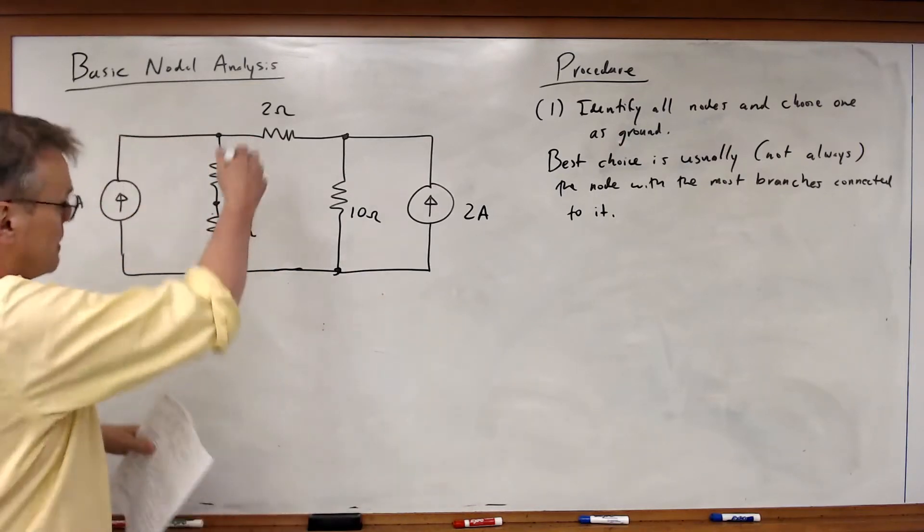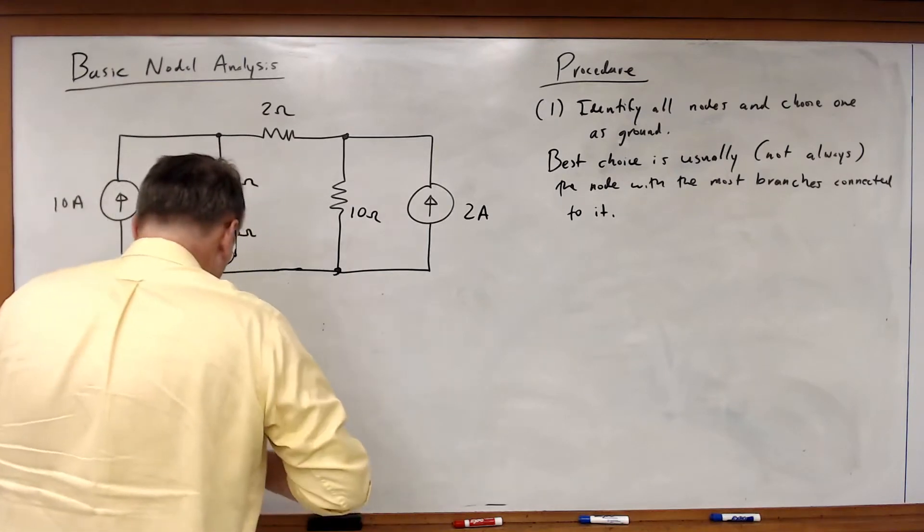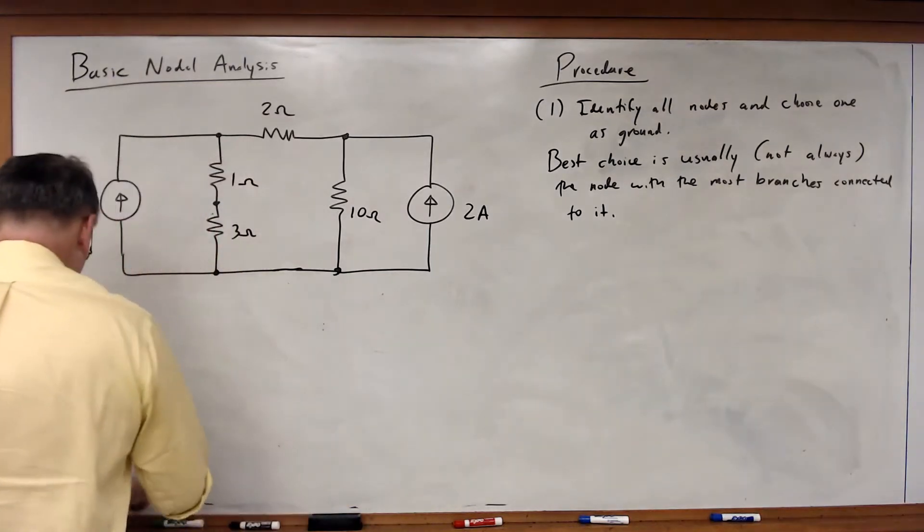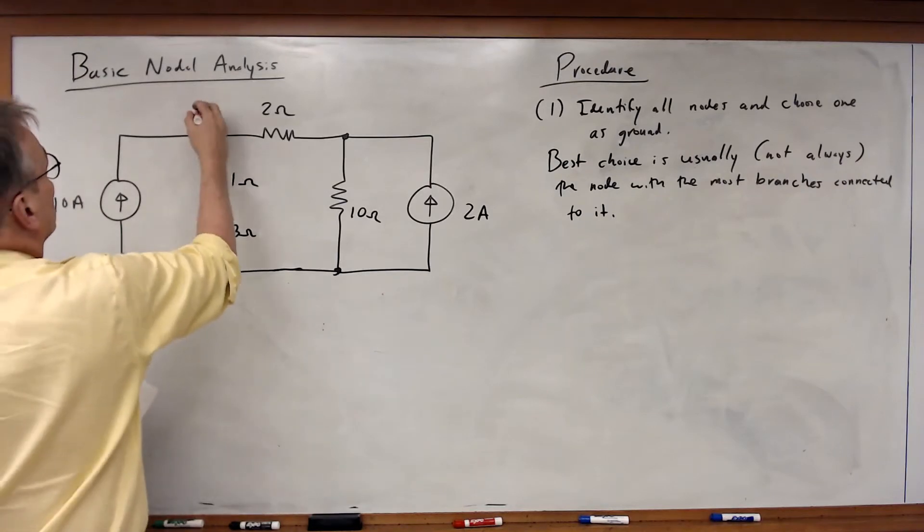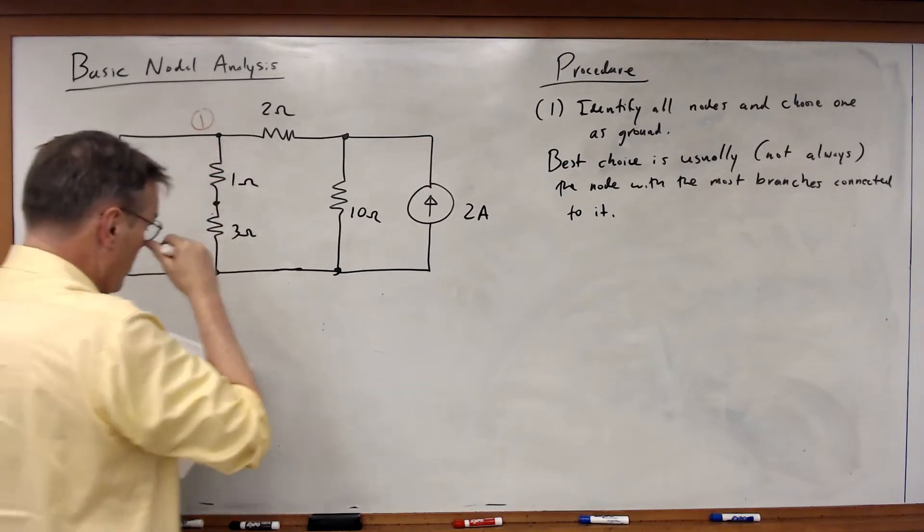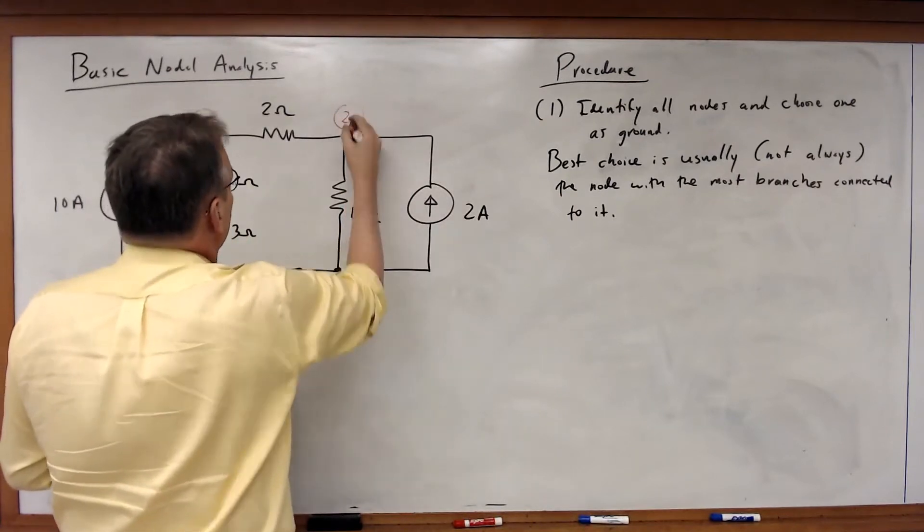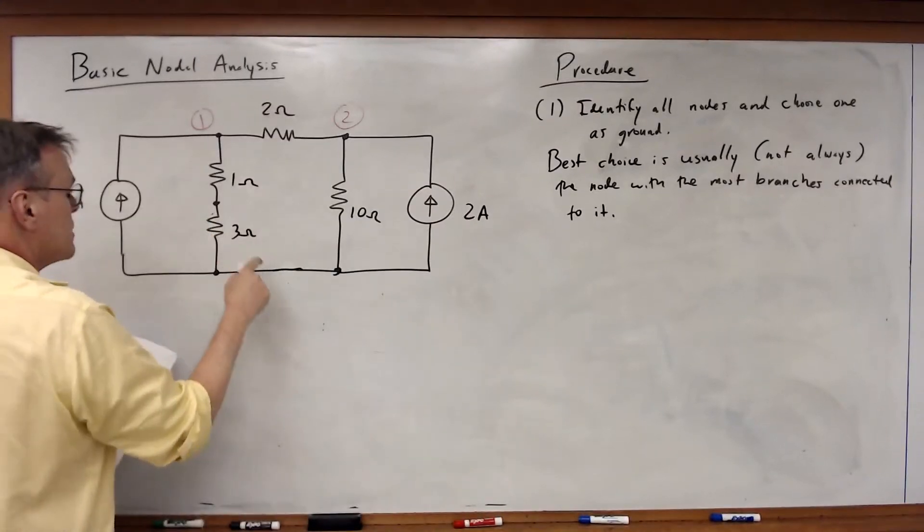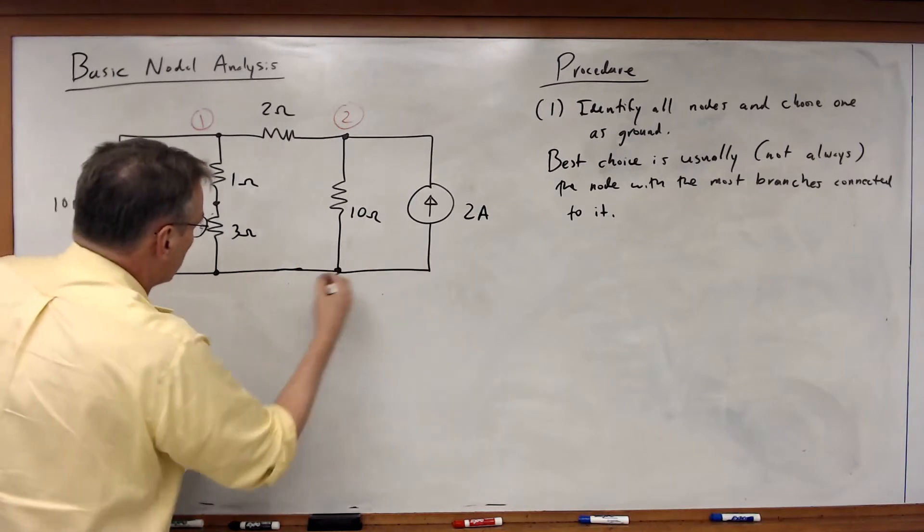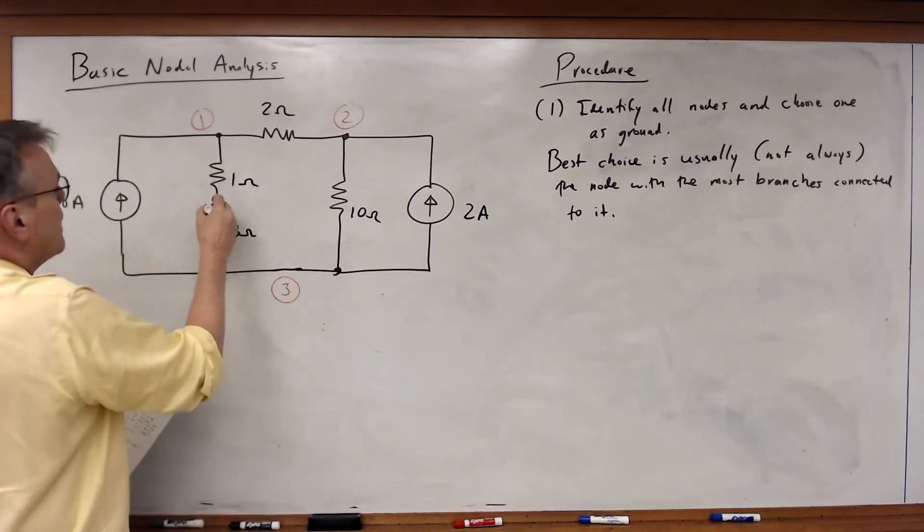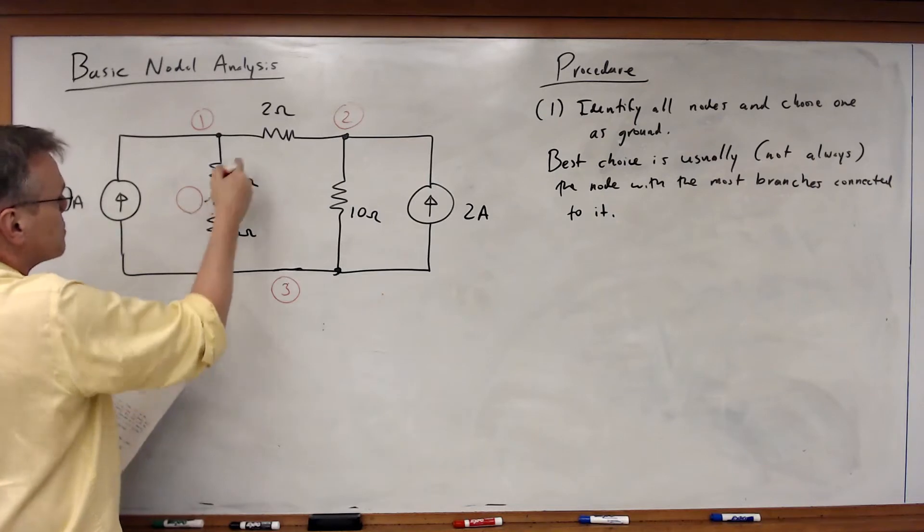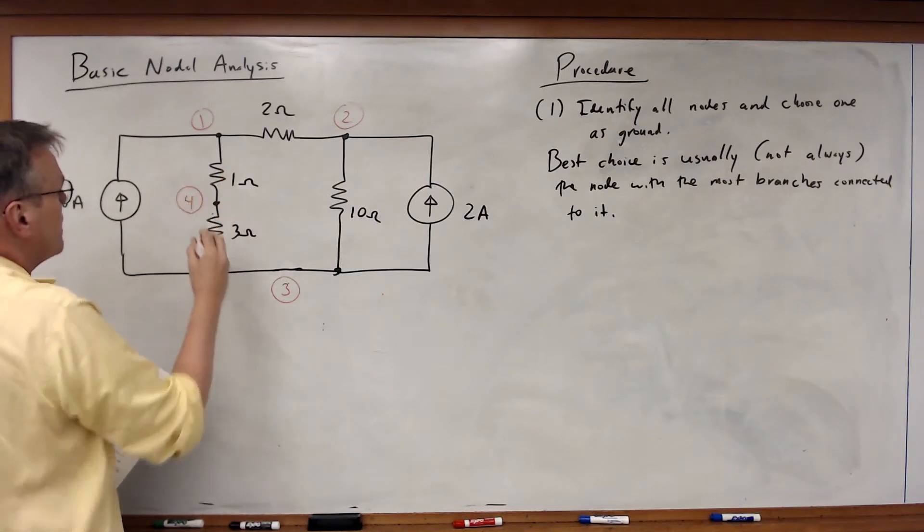So in this case, if we look at this, we have four nodes. I've got this node along the top, that's one. I've got this node here, that's two. I've got this node all along the bottom, call that three, and I've got this node that connects to this one-ohm and three-ohm resistor, I'll call that node four.